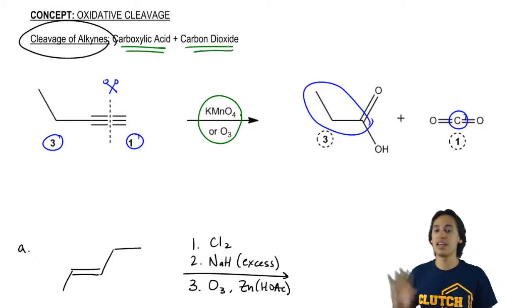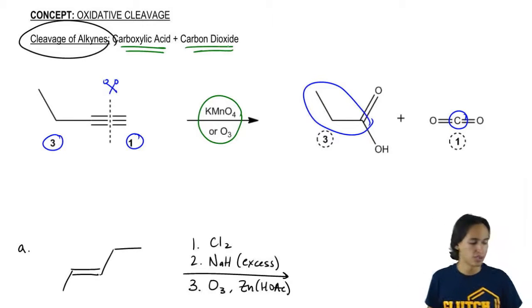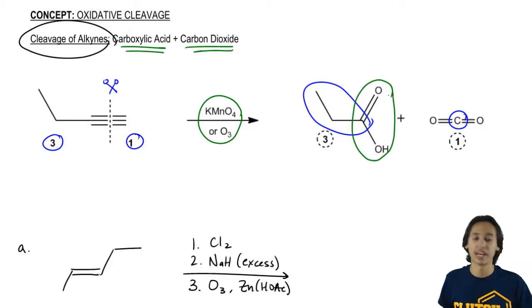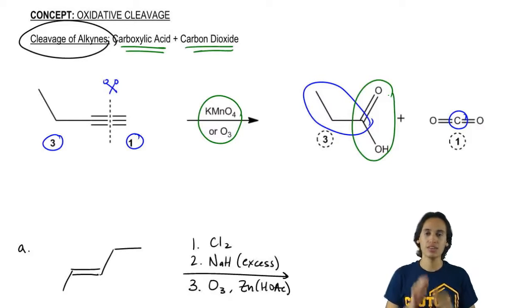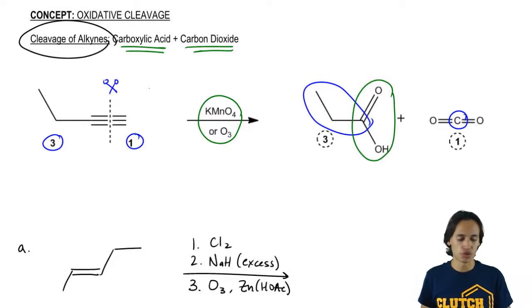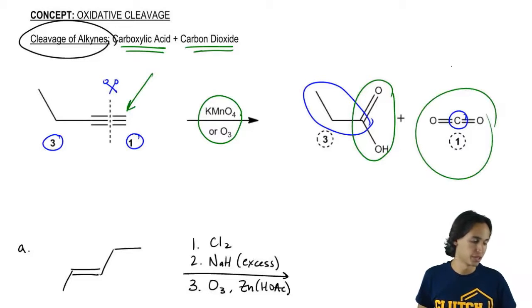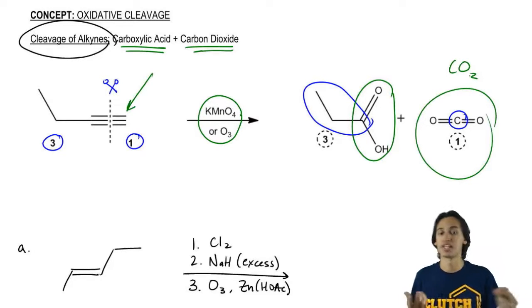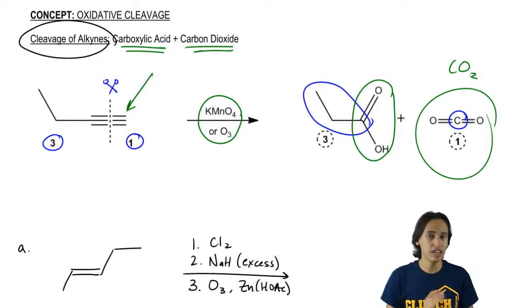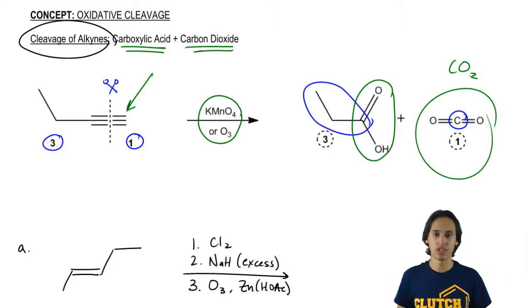In this case, as you can see, I had three carbons on one side, so that means I get a carboxylic acid on that one side. For the other one, I chopped off just a single lone carbon, so that one's going to be fully oxidized to CO2, carbon dioxide gas. That only happens when you're chopping off one carbon chain.